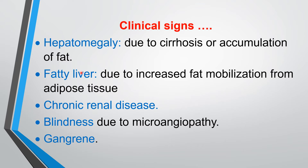Hepatomegaly and fatty liver are observed. Fatty liver is due to increased fat mobilization from adipose tissue into the liver cells and fat deposition into the liver cells. There is also chronic renal disease and, in severe cases, acute renal failure. Blindness is observed due to cataract and due to microangiopathy. In various parts of the body, gangrene is also observed due to two reasons: microangiopathy and decreased resistance, where the presence of glucose increases the chances of establishment of infection.